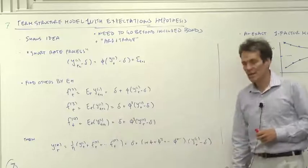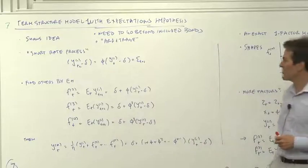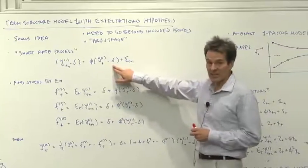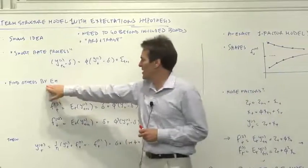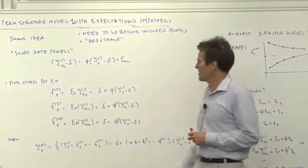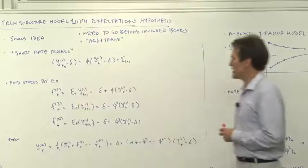So if we have that short rate process, and if we find all other prices with the expectations hypothesis, this is what all the prices should be at any moment.